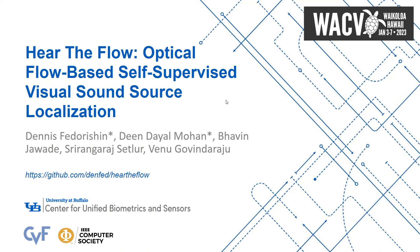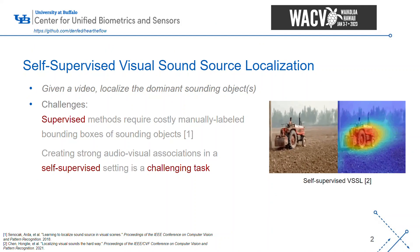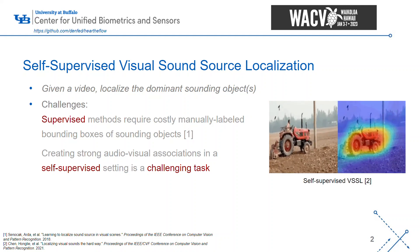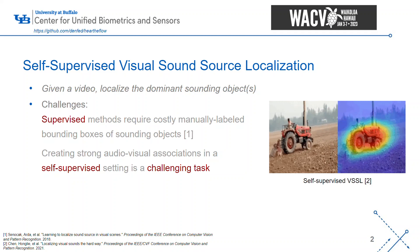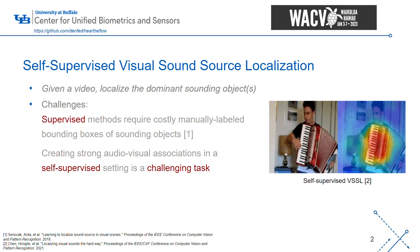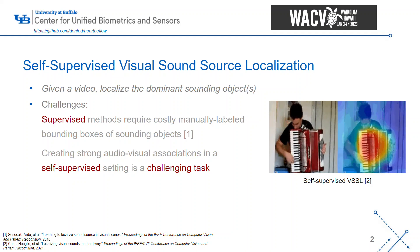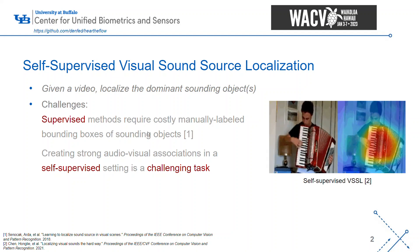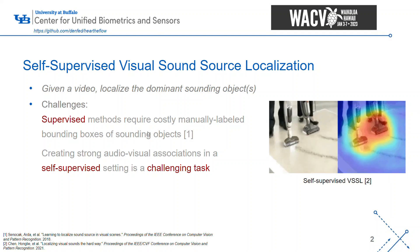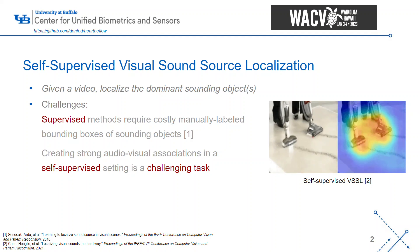Hello everyone, my name is Dennis Federation and I'm here to present our paper called 'Hear the Flow: Optical Flow-Based Self-Supervised Visual Sound Source Localization.' Visual sound source localization is essentially: given a video, can you localize the dominant sounding object or objects — whether it's vacuum cleaners or a person playing the accordion? We can train a supervised method to do this, but it would require expensive bounding boxes to be labeled manually.